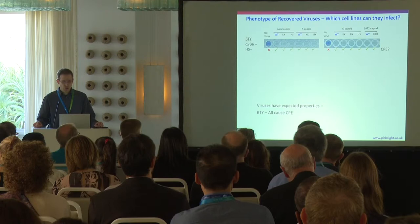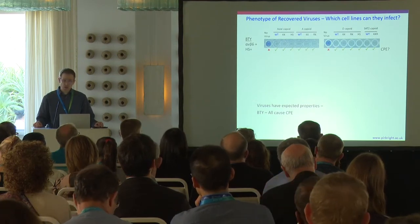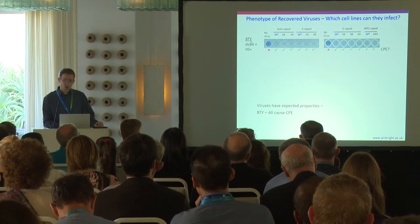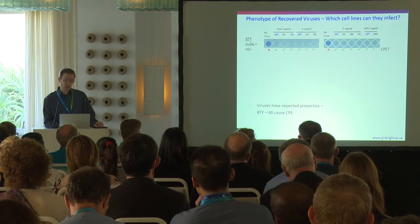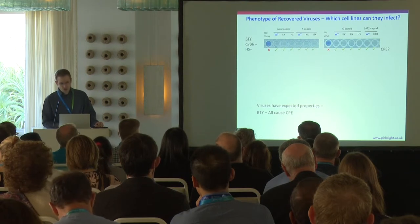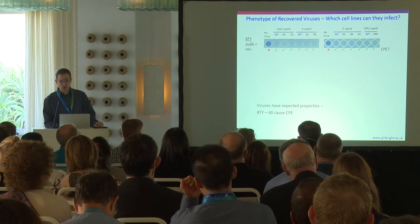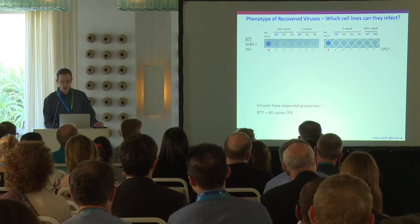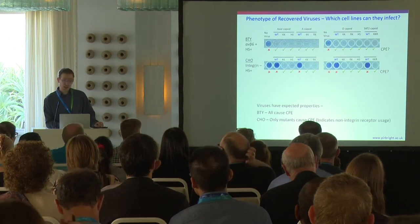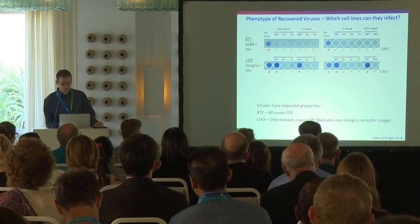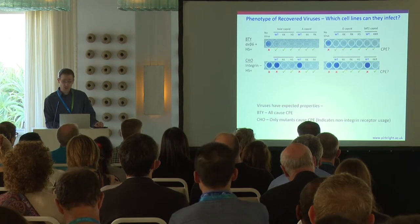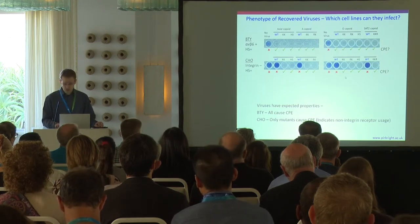The first thing we did was some simple experiments to look at the phenotype of the recovered viruses in terms of which cell lines they could infect. BTY cells, which are primary bovine thyroid cells, have heparan sulfate and also alpha-V-6 integrin, which is the most important integrin receptor used by field viruses. Consistent with this, all our viruses, whether wild-type or adapted mutants, could cause CPE in these cells. We next looked at CHOK1 cells, which have heparan sulfate but lack any of the integrins used by field viruses. Consistent with this, the wild-type capsid viruses didn't cause CPE, whereas the mutants did, indicating they are adapted to use a non-integrin receptor.